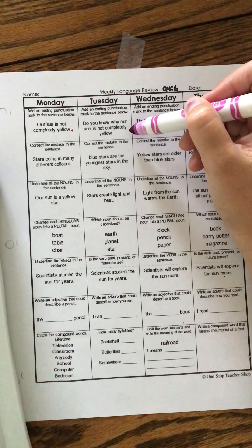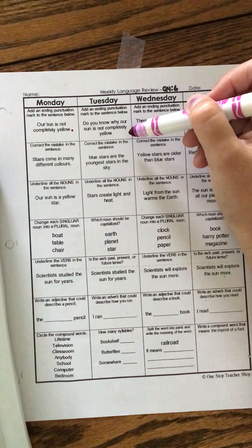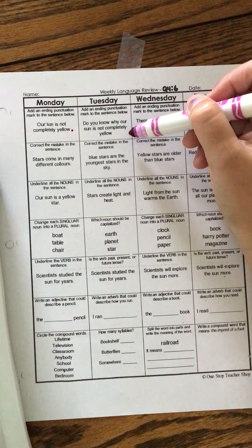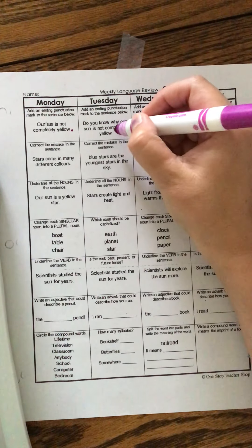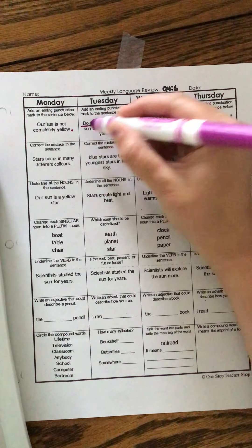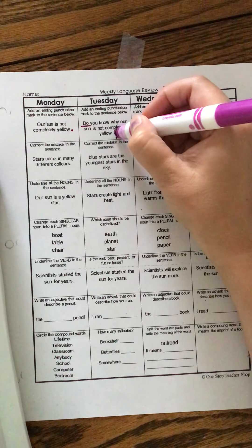Add an ending punctuation mark to the sentence below. Do you know why our sun is not completely yellow? Did they ask us a question? Yes, yes they did. So, do. That's one of our question words. So, we're gonna add a question mark at the end.